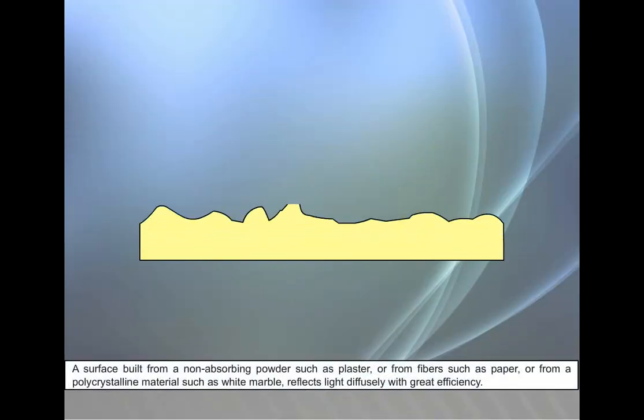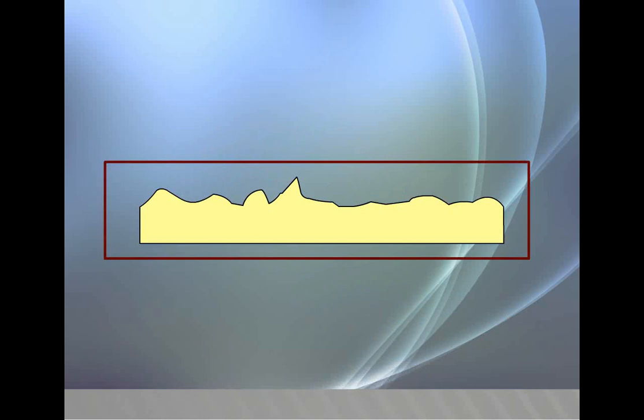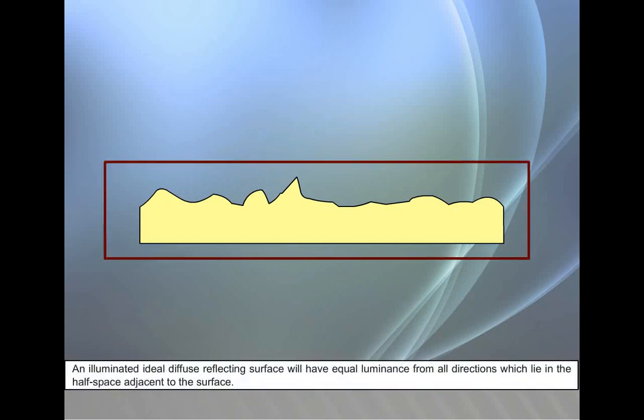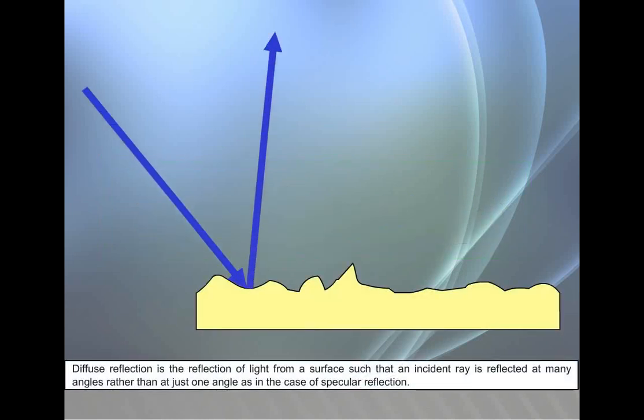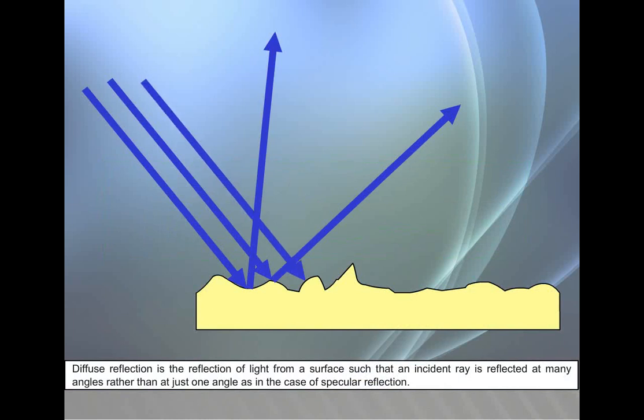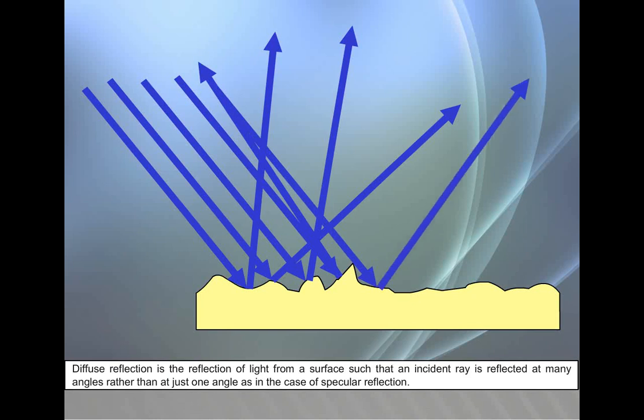Diffuse reflection: A surface built from a non-absorbing powder such as plaster, or from fibers such as paper, or from a polycrystalline material such as white marble, reflects light diffusely with great efficiency. An illuminated ideal diffuse reflecting surface will have equal luminance from all directions which lie in the half-space adjacent to the surface. Diffuse reflection is the reflection of light from a surface such that an incident ray is reflected at many angles rather than at just one angle as in the case of specular reflection.